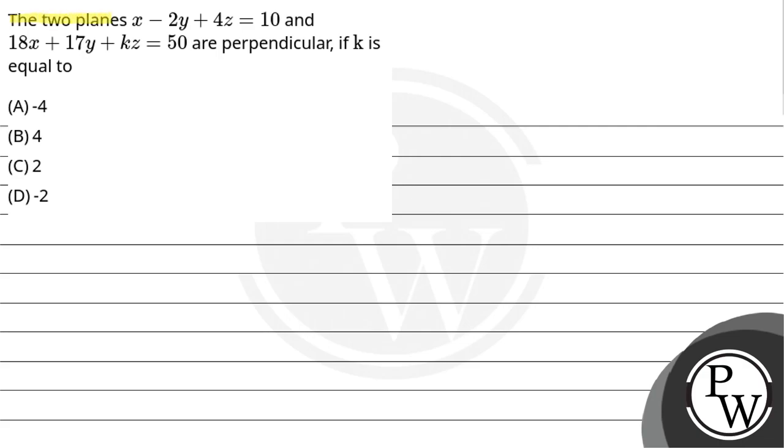Let's read the question. The two planes x minus 2y plus 4z equals 10 and 18x plus 17y plus kz equals 50 are perpendicular if k is equal to.